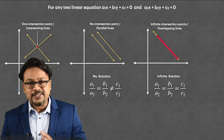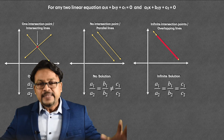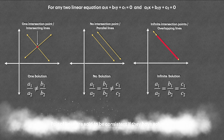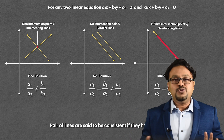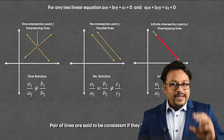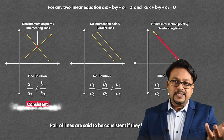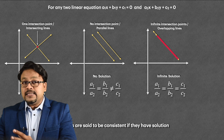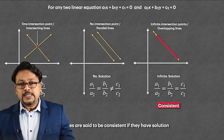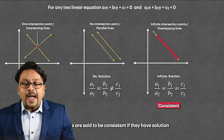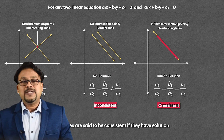Now let us discuss the very important part of this chapter: consistency. It is very simple. A pair of lines is said to be consistent if they have a solution — whether infinite or unique, they should have a solution. In the first case, when it has a unique solution, it has a solution, therefore the lines are consistent. In the last case, even if it has infinitely many solutions, it has a solution, so it is also called consistent. Pair of lines are said to be consistent if they have at least one solution. When the lines are parallel, they don't have any solution, therefore parallel lines are said to be inconsistent.